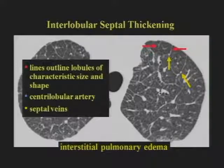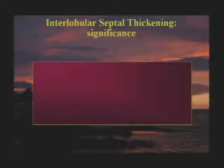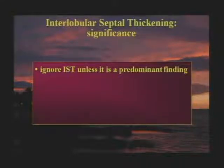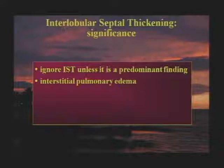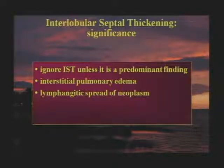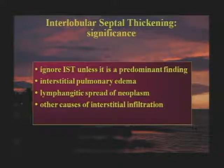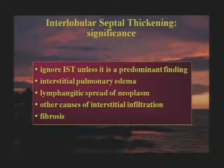Interlobular septal thickening in this case is due to interstitial pulmonary edema, certainly a common cause. What do you do if you see interlobular septal thickening on high-res CT? First, you ignore it unless it is the predominant abnormality, because a little septal thickening is very common in almost any diffuse lung disease, and unless it predominates, it has no value in differential diagnosis. Interstitial pulmonary edema is a common cause. Lymphangitic spread of neoplasm is also common. Some other infiltrative diseases cause septal thickening, but they're relatively rare — for example, amyloidosis. Patients with diffuse lung fibrosis can show interlobular septal thickening, but it is characteristically irregular in contour.